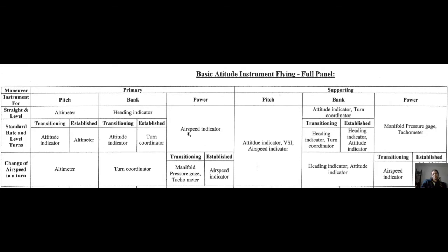What about power? Well, airspeed indicator is our first instrument to look at, and everything else that has something to do with power — in this case, our power settings. That would be our manifold pressure gauge, which we don't have in every airplane — it's usually associated with constant-speed prop planes. And our tachometer, which we do have in most airplanes.